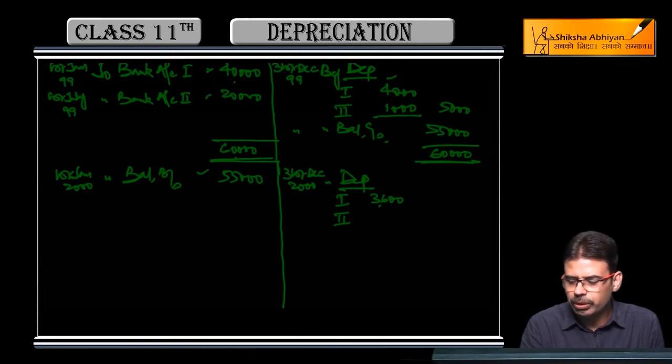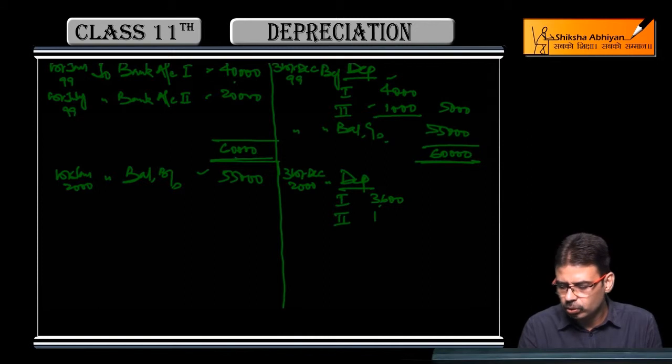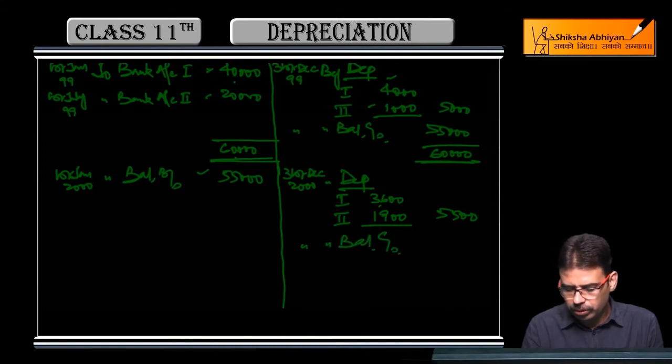If you want to apply separately, then look: 40,000 with 4,000 depreciation already applied, balance 36,000. On 36,000 full year depreciation is 3,600. Second machinery 20,000 rupees with 1,000 depreciation applied, balance 19,000. On that 10 percent depreciation is 1,900. Total 5,500 - same result.